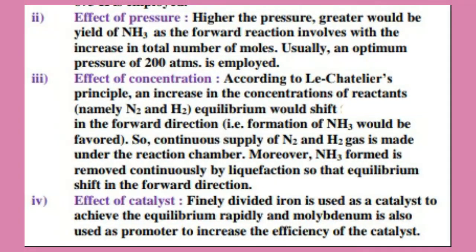Next, let us see the effect of pressure on the formation of Ammonia by Haber's Process. According to Le Chatelier's Principle, higher the pressure, greater would be the yield of Ammonia. This is because the forward reaction involves a decrease in the total number of moles. So, an optimum pressure of 200 atm is usually employed during the formation of Ammonia gas by Haber's Process by combining Nitrogen and Hydrogen gas.